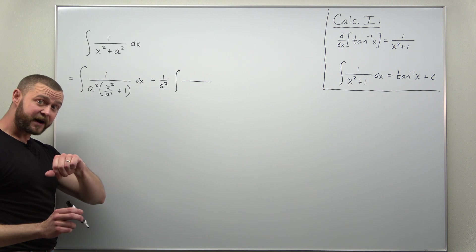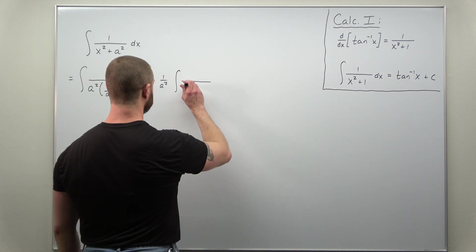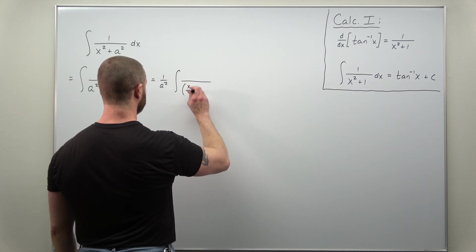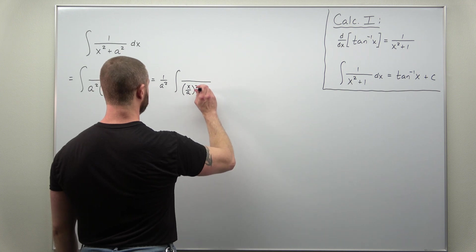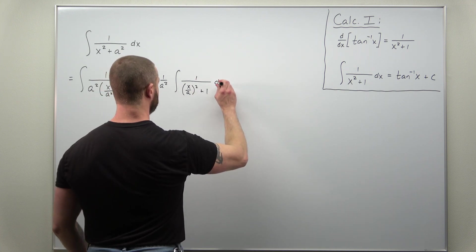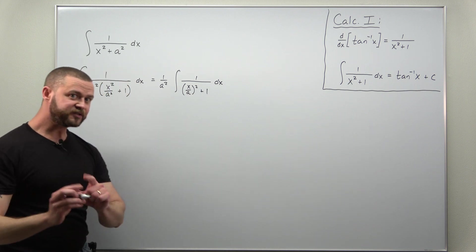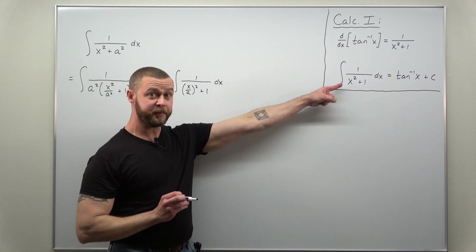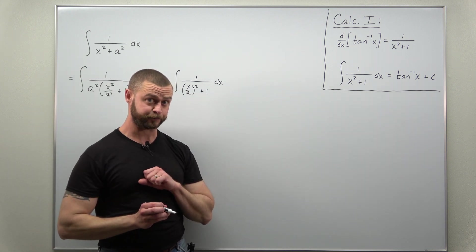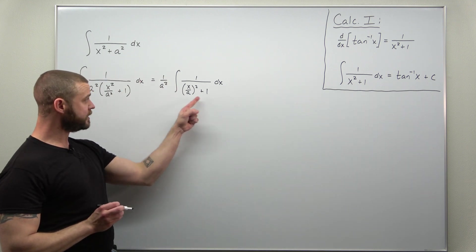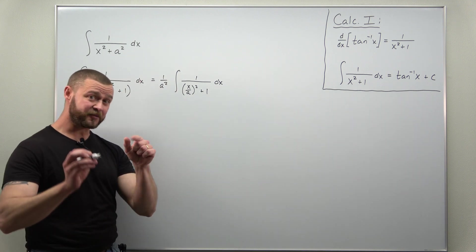And since we have x squared divided by a squared, I can write that as the quantity x divided by a, all squared. And that is plus 1.